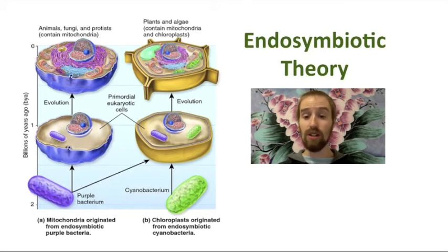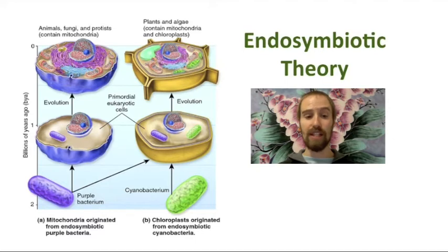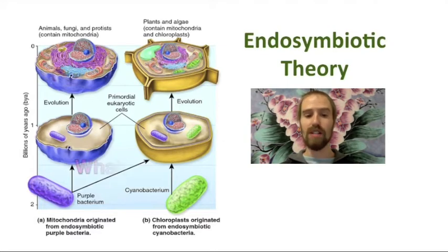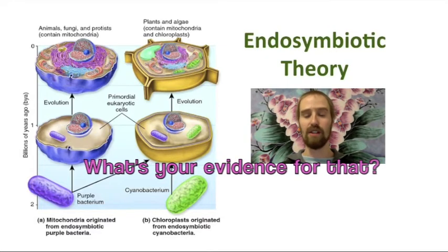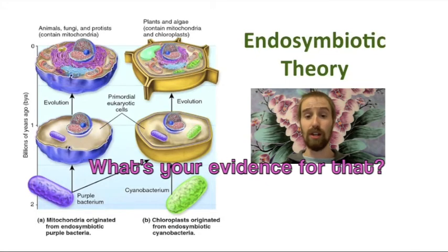Lichens and corals, after all, are both examples of symbiotic relationships between two different organisms living together as one, and nitrogen-fixing bacteria live among the roots of legumes in a similar fashion as well. But despite the modern similarities, as good scientists, we should always ask ourselves: what is the evidence that supports this theory?